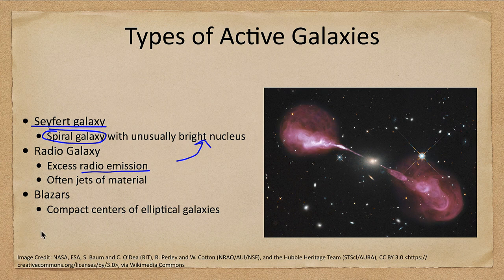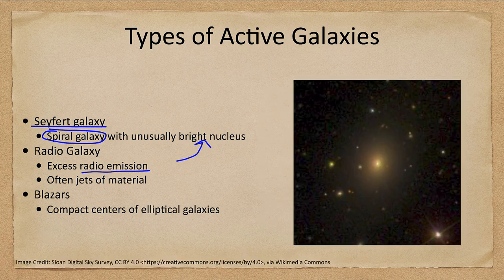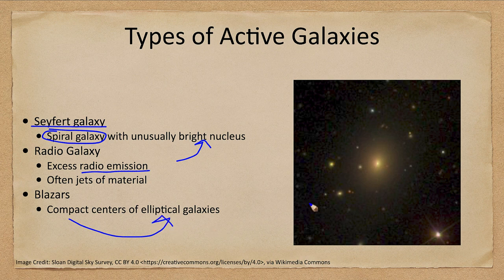We can also have blazars. Just like Seyferts were associated with spiral galaxies, blazars are associated with the compact centers of elliptical galaxies. It may not look like anything prominent, but an extreme amount of energy is coming from the core, giving off much more energy in the radio and other forms than we would expect from a typical elliptical galaxy.